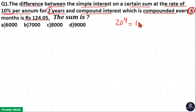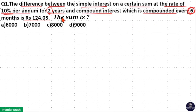Here 2 raised to 4 is 16, and there are total 4 zeros, which means 1,60,000 is your principal. Now calculate compound interest for 1,60,000 over 4 six-month terms.